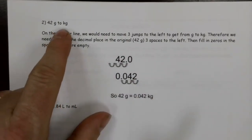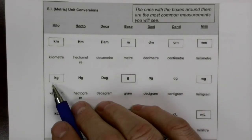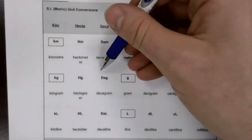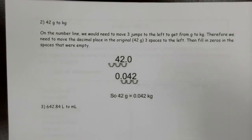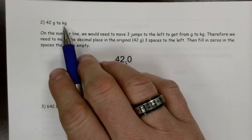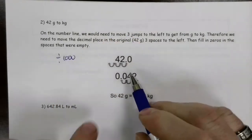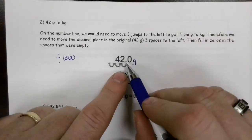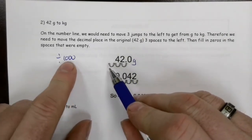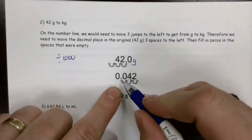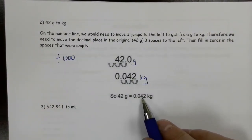Now let's convert 42 grams to kilograms. Going from grams to kilograms is three steps on the scale — so we either multiply or divide by 1,000. Because we're going from a small unit to a large unit, the number must get smaller, so we divide by 1,000. The decimal in 42 grams is after the two; dividing by 1,000 moves it three places to the left, giving us 0.042 kilograms.